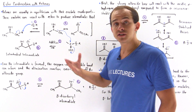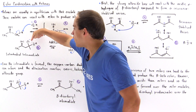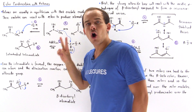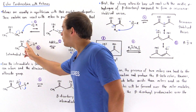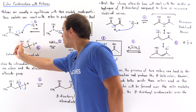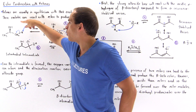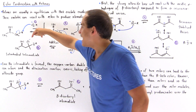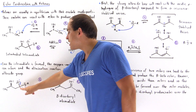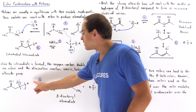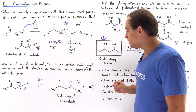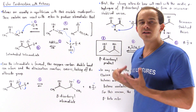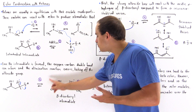Once the tetrahedral intermediate forms, two things can take place, just like in the Claisen condensation. The pi bond between the oxygen and the carbon will reform, and there are two potential leaving groups. If the ketone enolate section acts as the leaving group, we go back in the reverse pathway to reform our starting materials — the ketone as well as the ester. But if the alkoxide acts as the leaving group, it breaks off and we reform the beta-carbonyl intermediate as well as our alkoxide base.